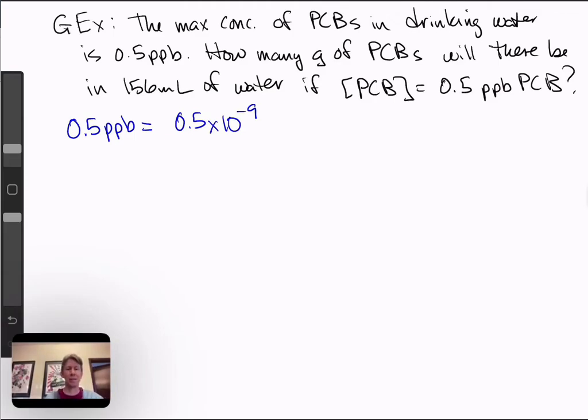it'd be 0.5 times 10 to the minus 6. And this time it's grams PCB over 1 gram of water.